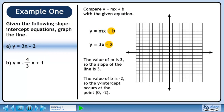The value of b is minus 2, so the y-intercept occurs at the point (0, -2). Plot the y-intercept.